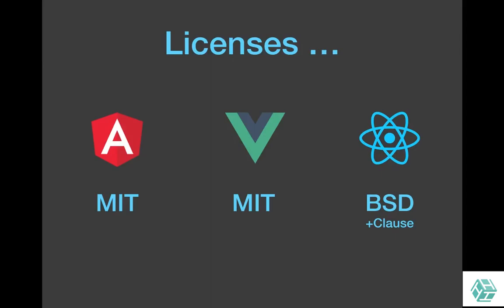Finally, with React 16, Facebook decided to change the license of React. Previously, React was licensed with the BSD license plus an extra clause stating that if you sue Facebook, you could lose the grant for patents about React. This has been changed for React 16 — React now has an MIT license, such as Angular or Vue.js.